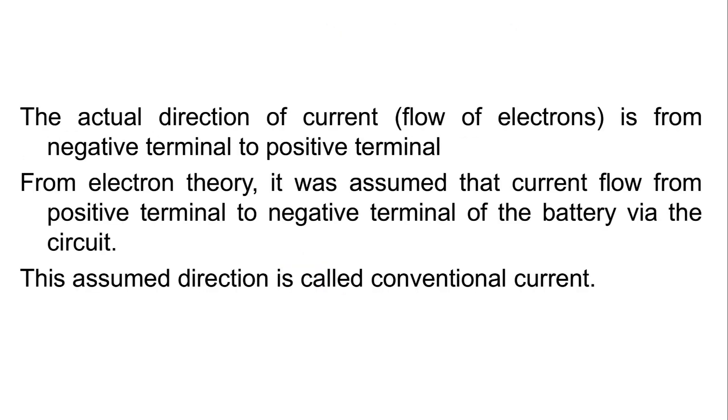The actual direction of current, flow of electrons, is from negative terminal to positive terminal. From electron theory, it was assumed that current flows from positive terminal to negative terminal of the battery via the circuit. This assumed direction is called conventional current.